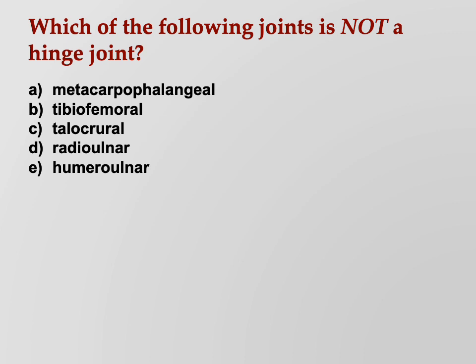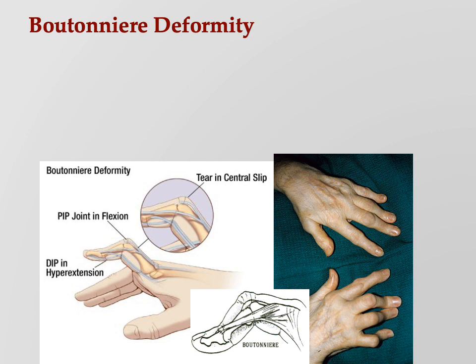Let's start this annotated PowerPoint with a quiz. Which of the following joints is not a hinge joint: the metacarpophalangeal, the tibiofemoral, the talocrural, the radio-ulnar, or the humeral-ulnar? Pause the video and come back when you're ready. The radio-ulnar is a pivot joint; the others are in fact hinge joints.